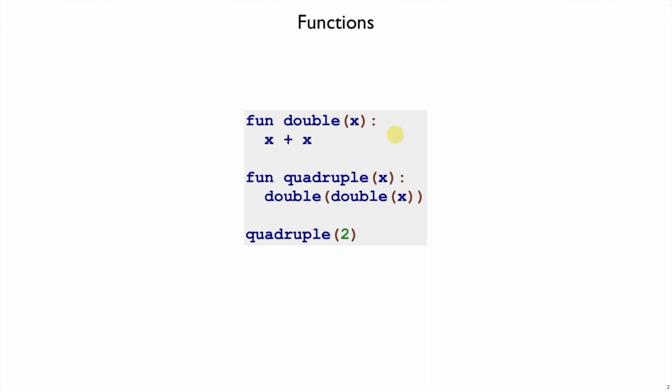This is what we want mo to look like now. You can define a function like double that takes an argument x and adds x to itself, a function quadruple that takes x and calls double a couple of times, and quadruple at the end on 2, we should get out 8 as the result for our new mo language.